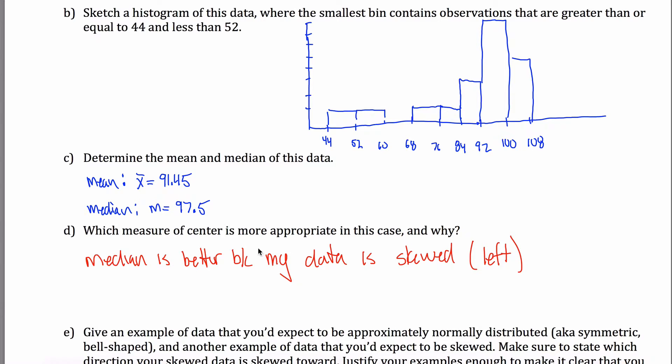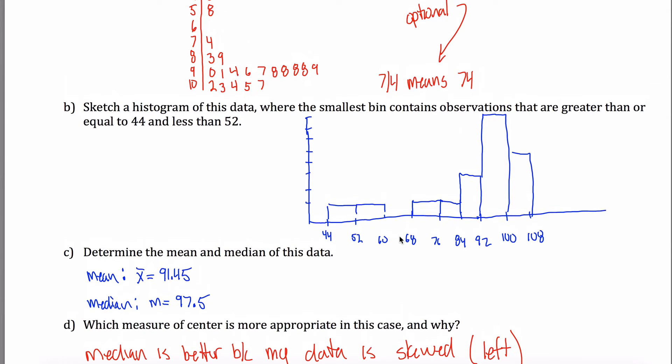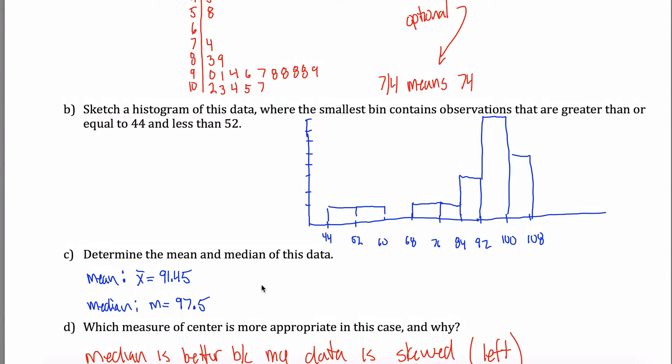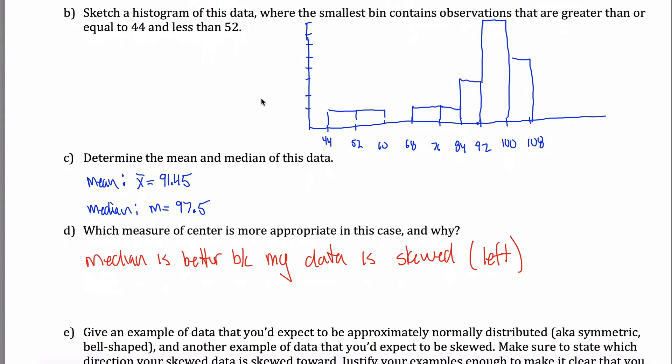I just told you in class that anytime your data is approximately normal, the mean is the better measure, and anytime your data is skewed, the median is the better measure. And really what's going on here is 97.5 right in here is your median that feels about right. The mean, 91.45 is way down here. What happened are these observations that were really, really low really pulled my mean down a lot, and it made it lower than where the center really is, which happens when you have skewed data, which is why we use the median in that case.